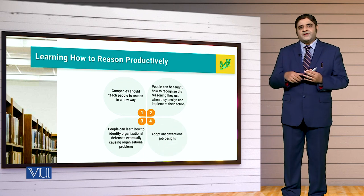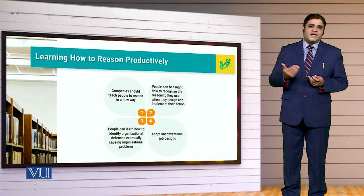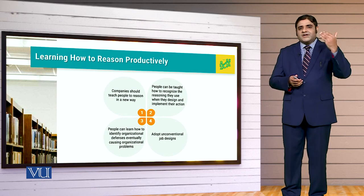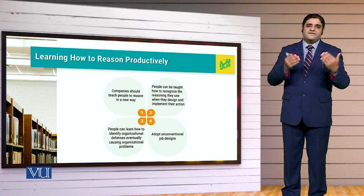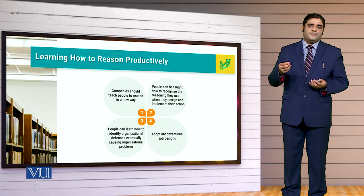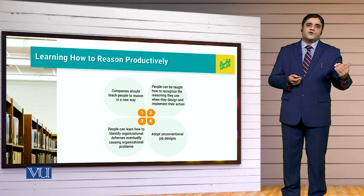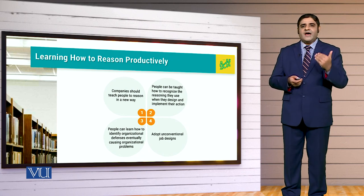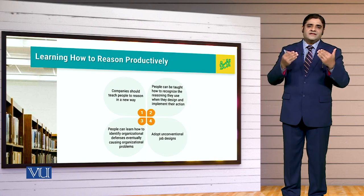Another important thing is that we will design jobs in a new way. We will build them more enriched, with such characteristics that people will be psychologically involved in those jobs. For example, there is a very famous model known as JCM, the Job Characteristic Model, so that people are more engaged psychologically and are committed to getting results done.